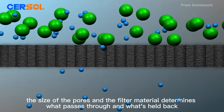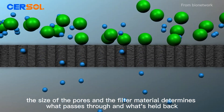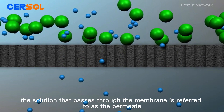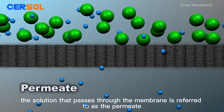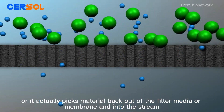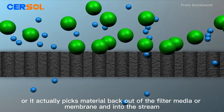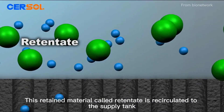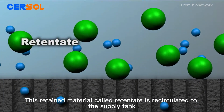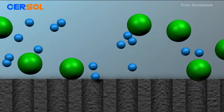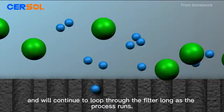The size of the pores and the filter material determines what passes through and what's held back. The solution that passes through the membrane is referred to as the permeate. This retained material, called retentate, is recirculated to the supply tank and will continue to loop through the filter as long as the process runs.